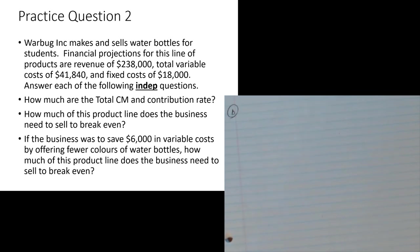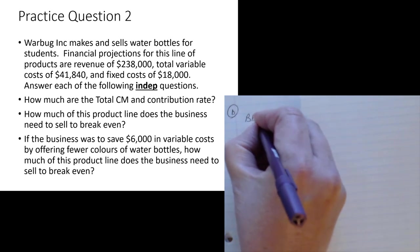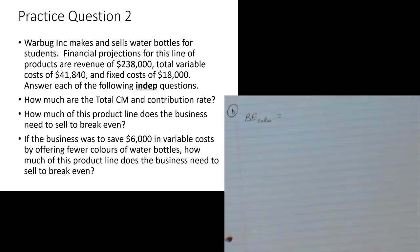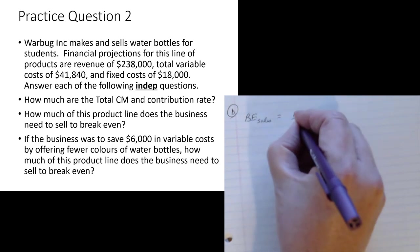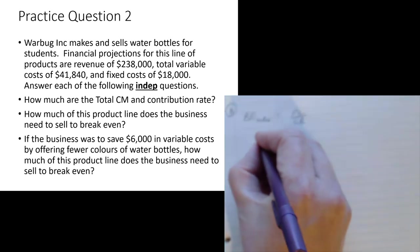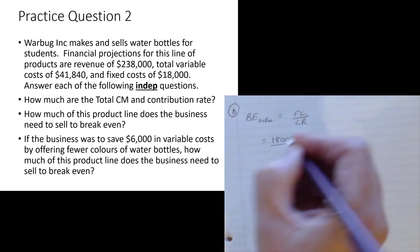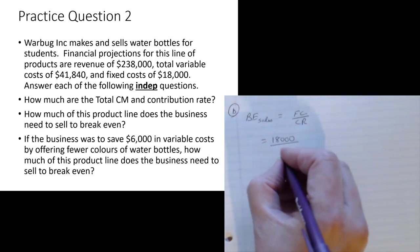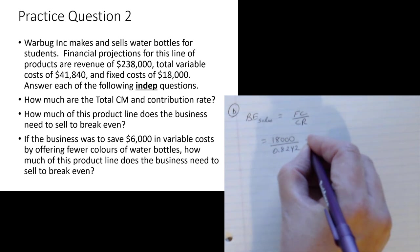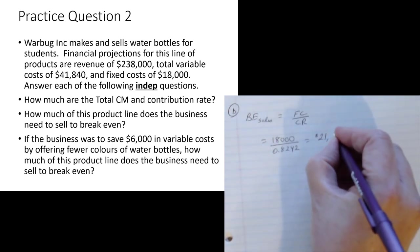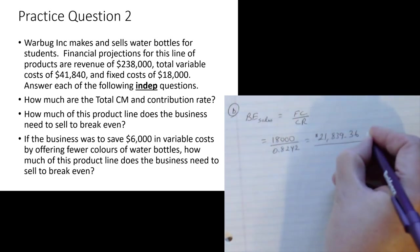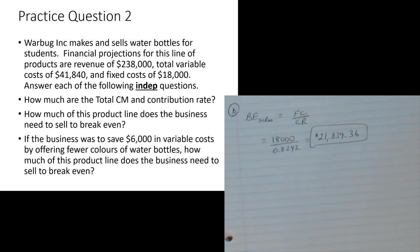Part B: how much in sales dollars does the business need to break even? Break-even in sales is fixed cost divided by contribution rate. Fixed cost is $18,000 (given) and contribution rate is 0.8242 (from Part A). So: $18,000 ÷ 0.8242 = $21,839.36.